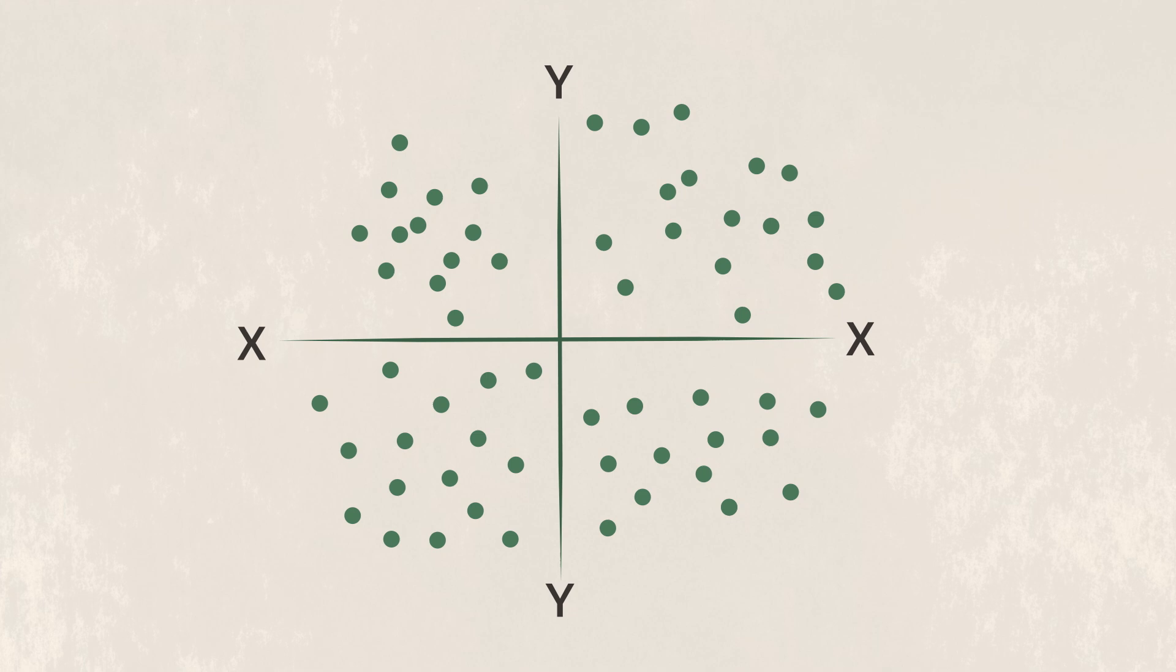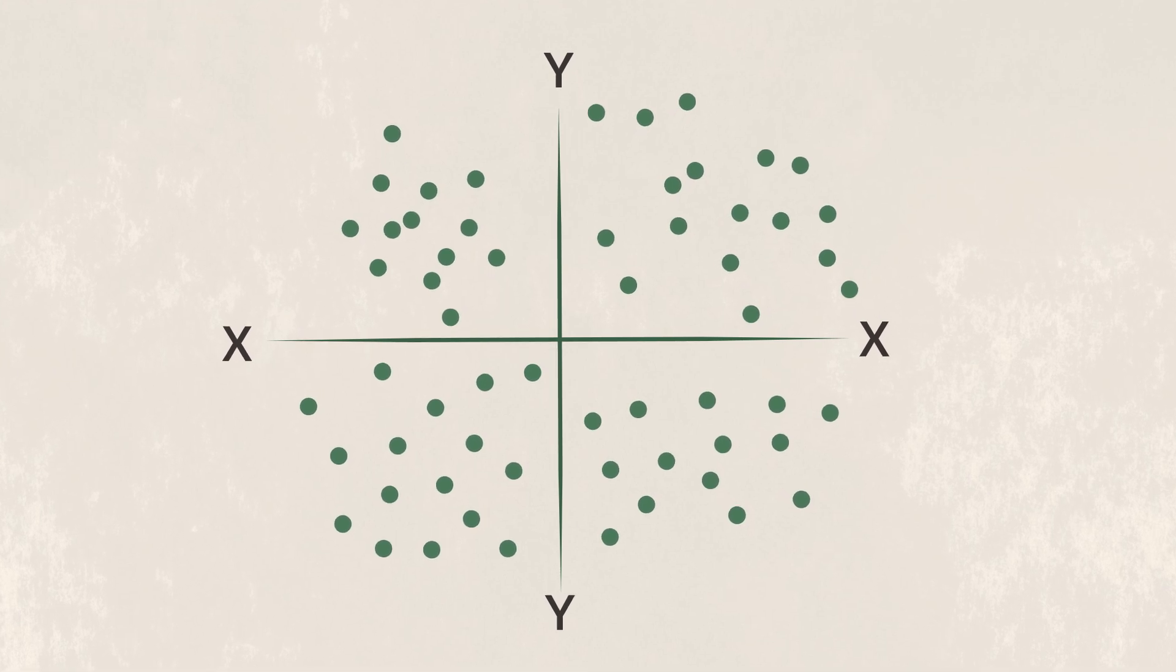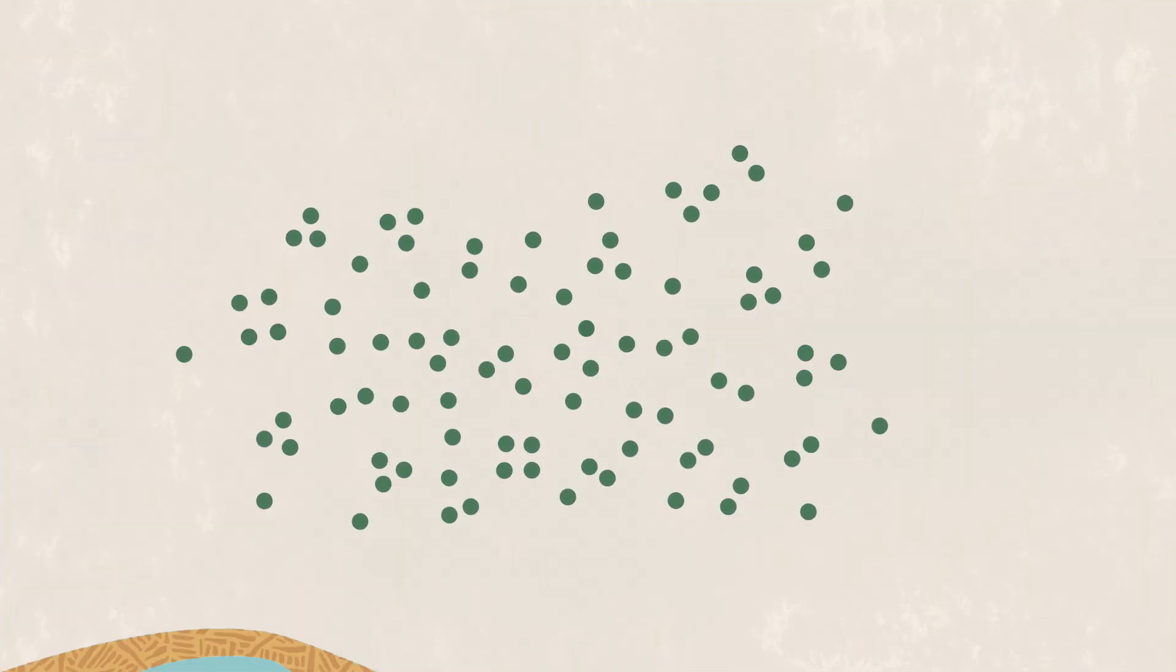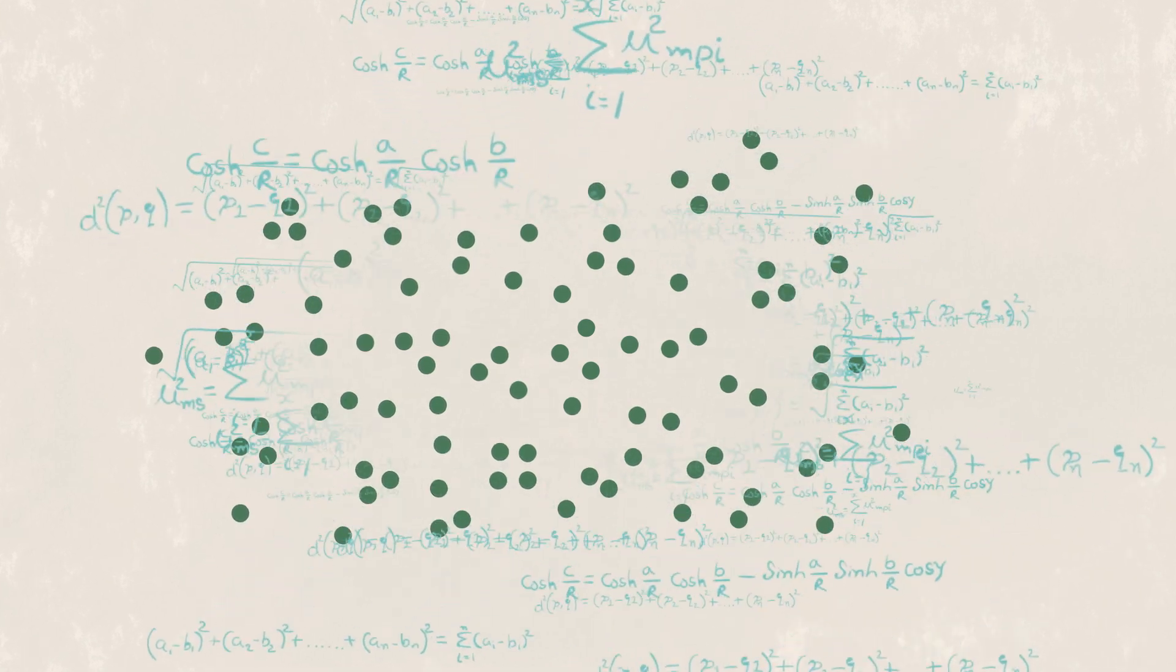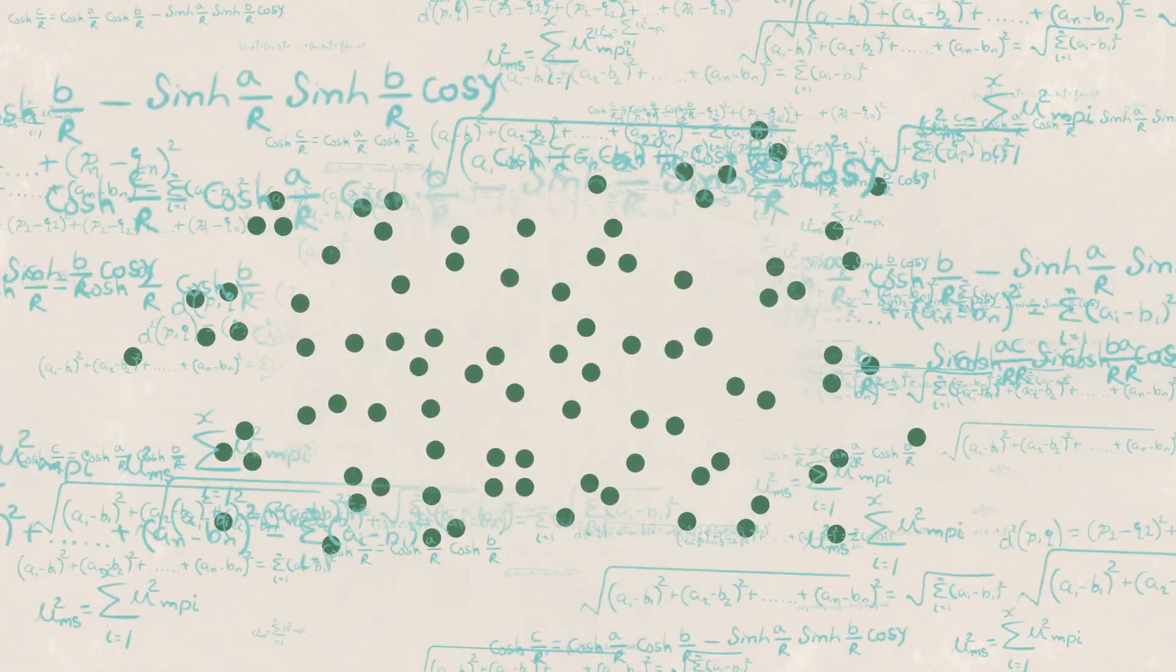To simplify our example, we're using two-dimensional graphs, but vector indexes work in very detailed, high-dimensional space and use sophisticated math to group and retrieve items.